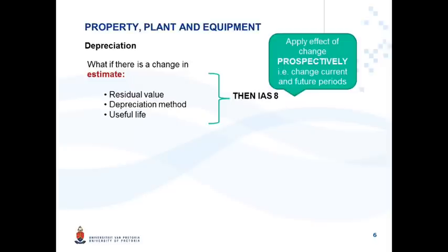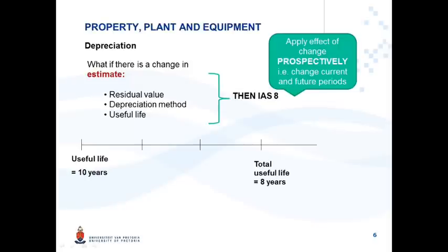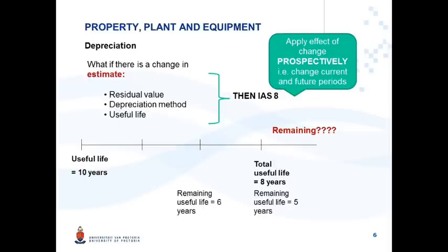To illustrate: you have an asset with an estimated useful life of ten years. After three years have passed, in year three you estimate the total useful life is actually only eight years. The remaining useful life at the end of year three would be five years. At the beginning of year three the remaining useful life is six years. So the total useful life changed to eight years in year three — at the beginning of year three the remaining useful life is six years, and at the end of year three it is five years.